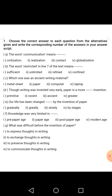Part A, Seen Part. Question number 1: Choose the correct answer to each question from the alternatives given and write the corresponding number of the answers in your answer script. Students, you will have to write down all the answers of the exercises in your classwork copy.